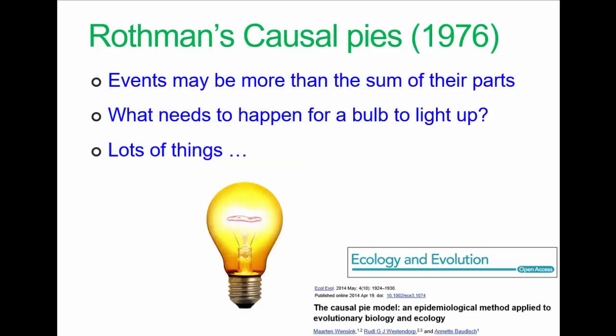Okay, so causal factors are complicated. Rothman's causal pies are one of the models which has been used to suggest a metaphor for how these things work. It just gives us some information on some ways of thinking about how things happen.